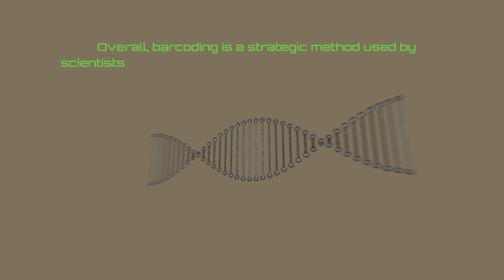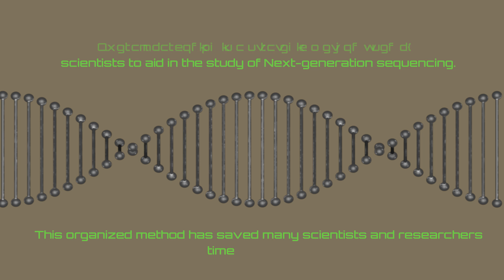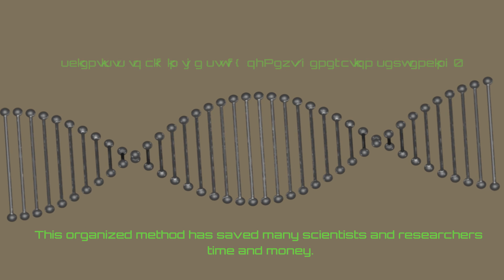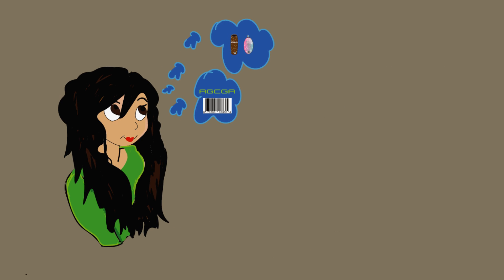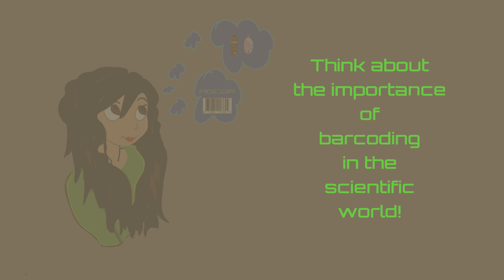Overall, barcoding is a strategic method used by scientists to aid in the study of next-generation sequencing. This organized method has saved many scientists and researchers time and money. So the next time you glance at the barcode of your favorite sports drink, think about the importance of barcoding in the scientific world.